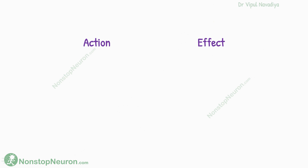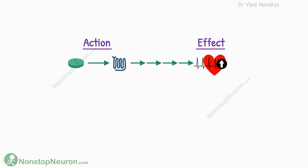While talking about how the drug works, you will come across two terms frequently: action and effect. Action is the initial combination of the drug to its target molecule, and the changes caused in that molecule. Whereas effect means the final change in biological function that occurs as a consequence of action through a series of intermediate steps. In simple words, action is about how the drug works at the molecular level, and effect is the final result of that action at the physiological level.